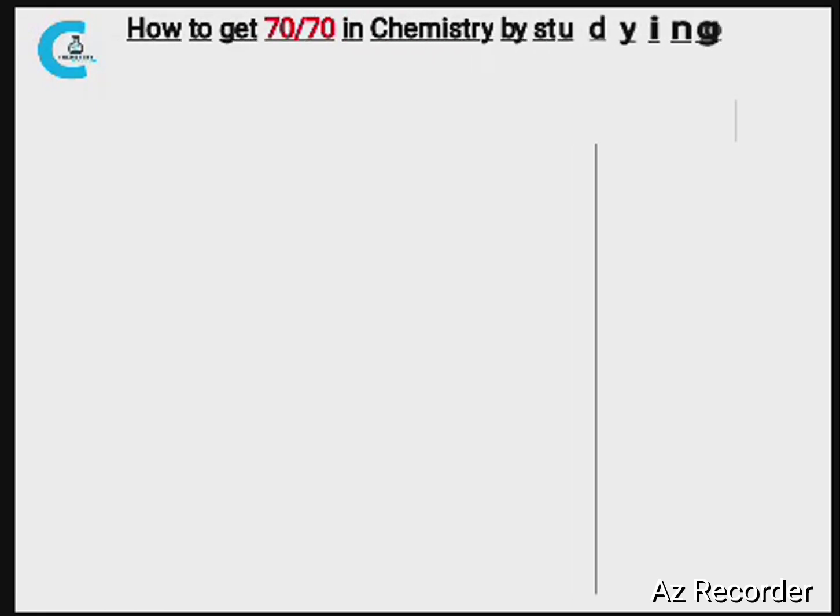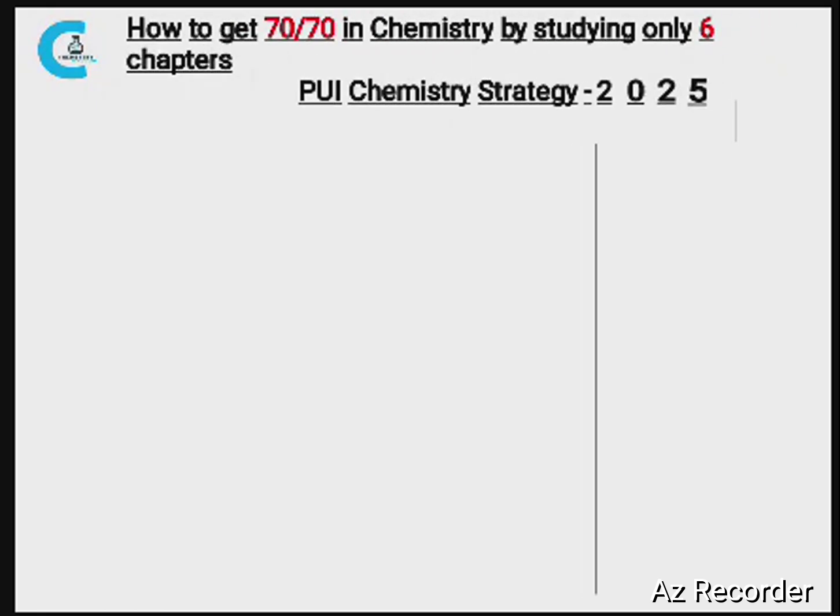Good morning dear students. Welcome to Chemistry Kingdom YouTube channel. In today's class we are going to talk about the strategy to study for first PU chemistry board exam, Karnataka board — how to get 70 out of 70 in chemistry by studying only 6 chapters. What are those chapters? I am going to share that in this video.